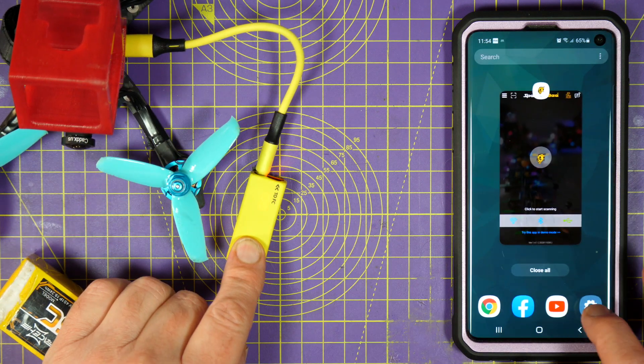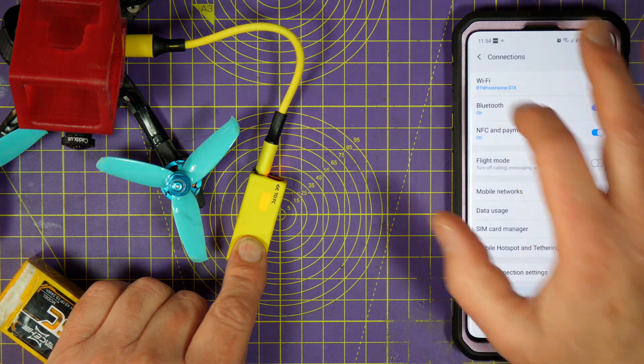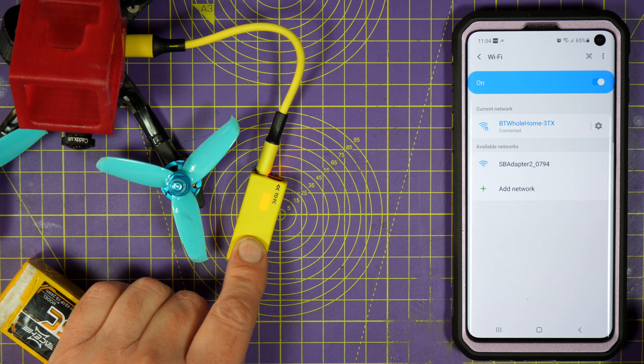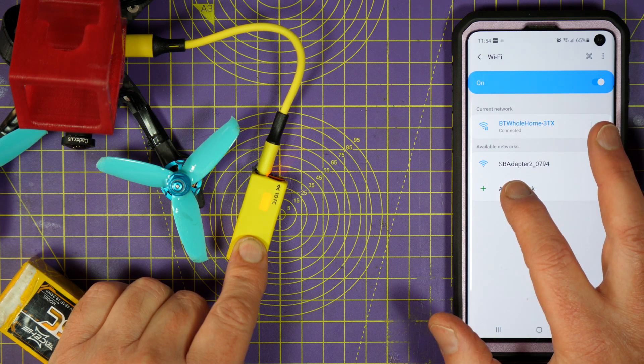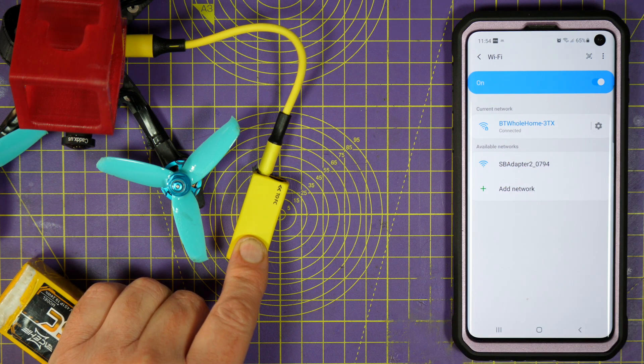So, if you go into your settings on your Android phone, when it's scanned, there we go, it's got the SPA adapter 2 and then there'll be a different serial number for yours. You just connect to that.